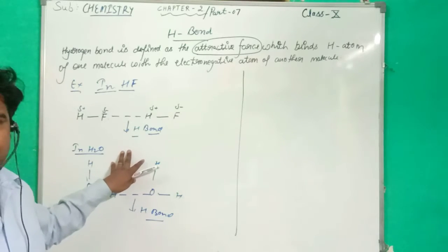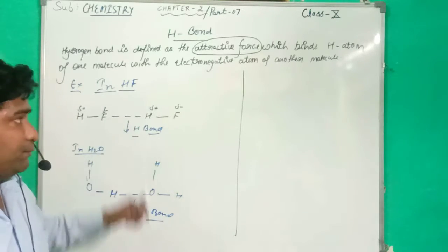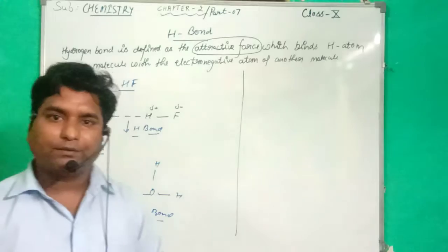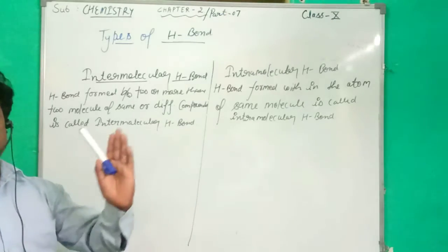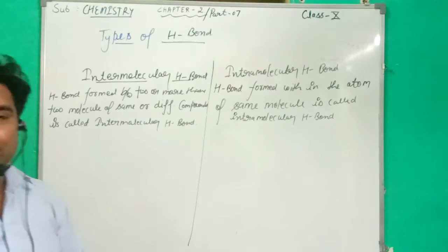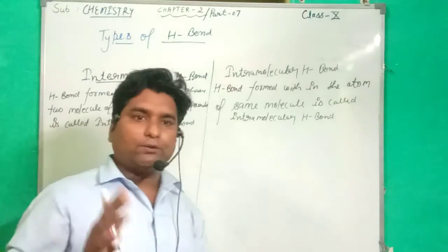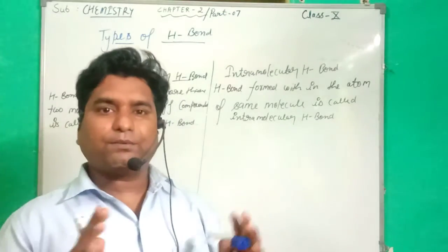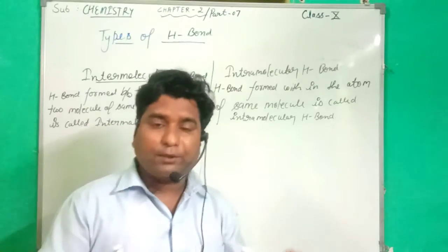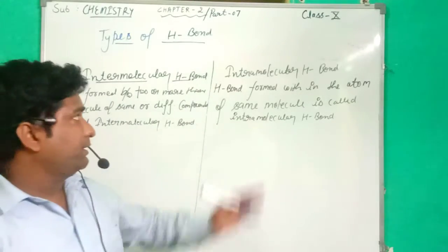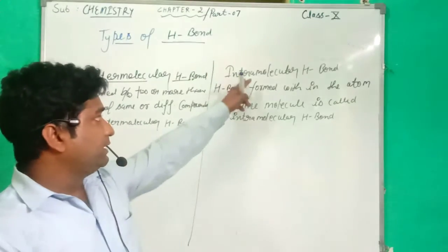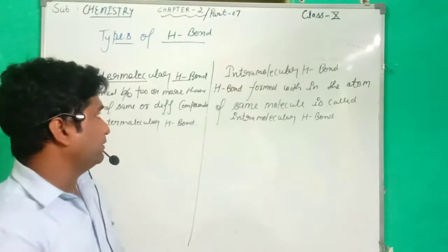After this, we will discuss the types of Hydrogen Bond. There are two types of Hydrogen Bonds: the first one is the Intermolecular Hydrogen Bond, and the second one is the Intramolecular Hydrogen Bond.